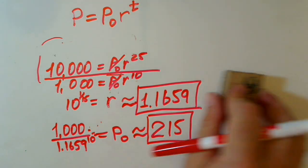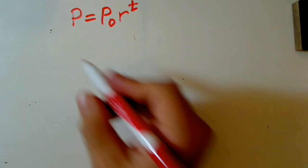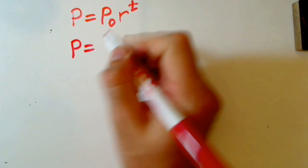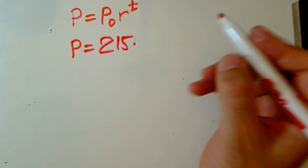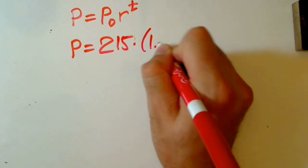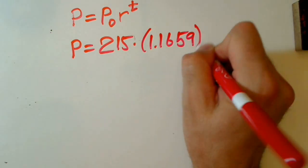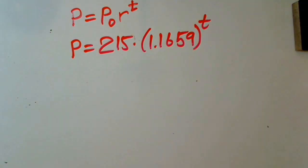And it means now we can rewrite our mathematical model of the relation of bacteria, which is P equals initial population, which is 215 times R, which is 1.1659, raised to T.